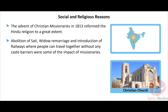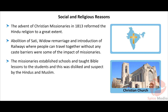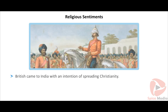Social and religious reasons: From 1813 AD, Christian missionaries entered India with the intention of converting Indians to Christianity. They brought about the abolition of Sati and introduced railways where people could travel together without caste barriers. Christian missionaries established schools for boys and girls in which teaching of the Bible was compulsory. This made orthodox Hindus and Muslims suspicious. Muslim Maulwis also called for a holy war against Christianity.